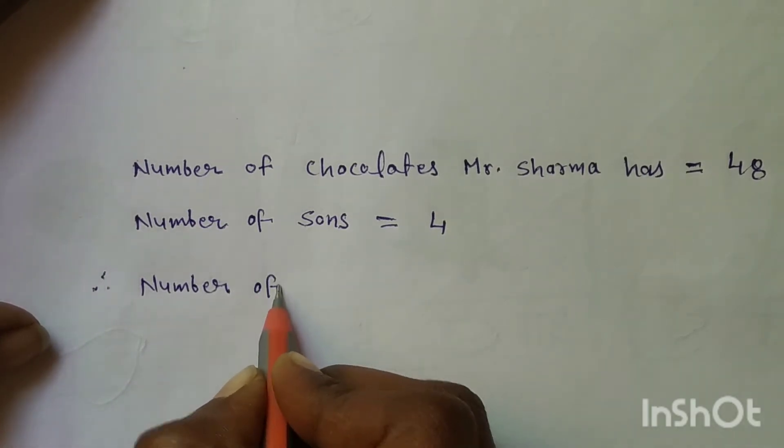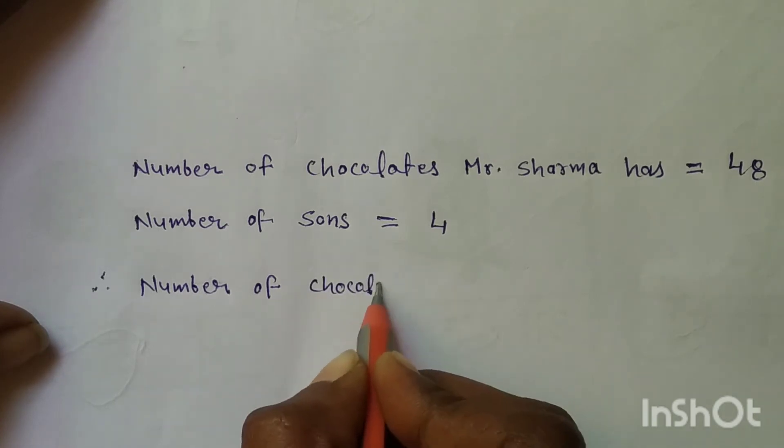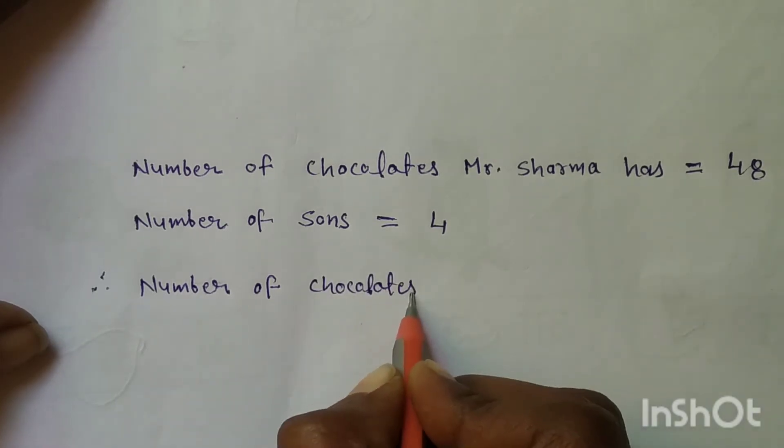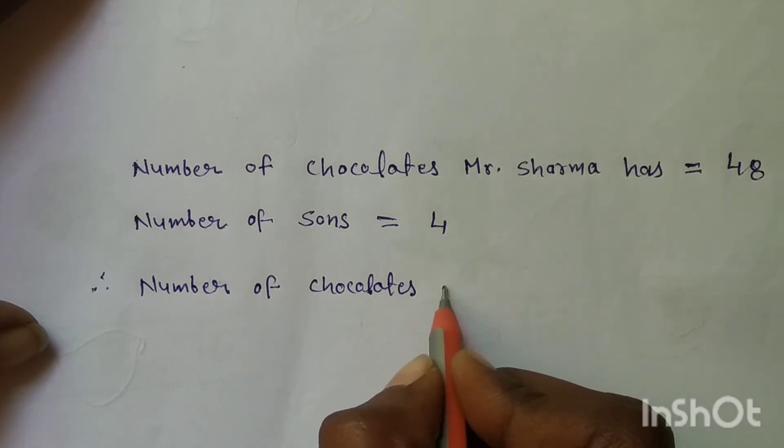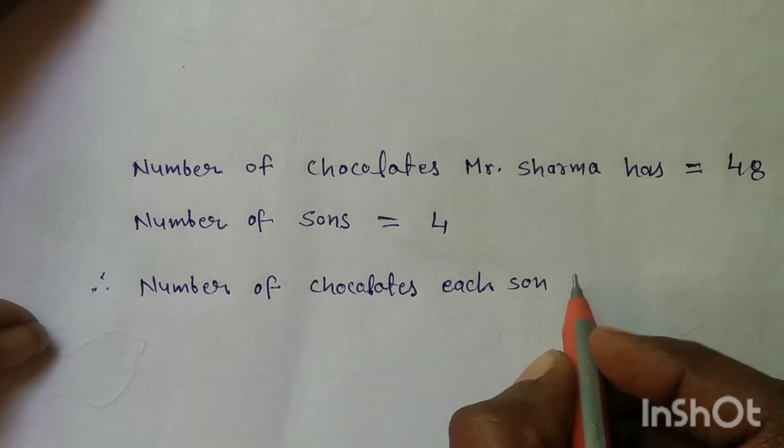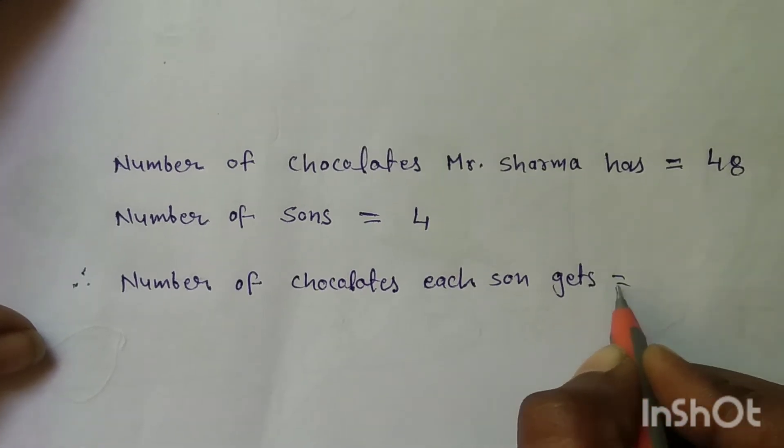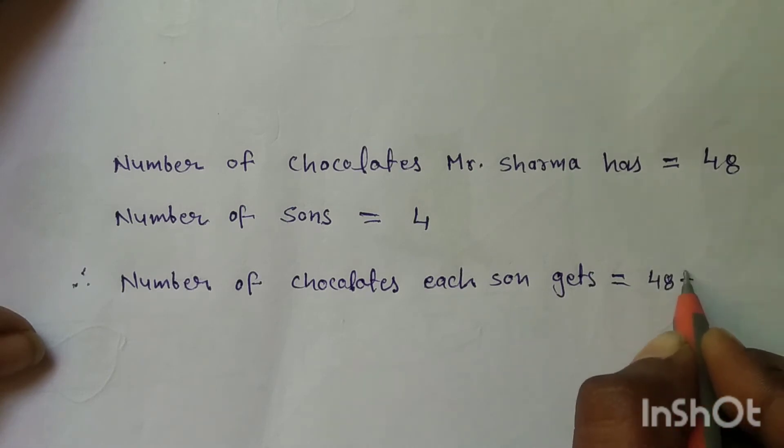Number of chocolates each son gets is equal to 48 divided by 4.